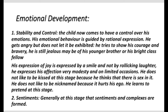Emotional development during late childhood: first, stability and control — this is a period of emotional stability and control. The child comes to have control over his emotions and his emotional behavior is guided by rational expression. He gets angry but does not let it be seen; he gets frightened but tries to show courage and bravery. His expression of joy is expressed by a smile and not by loud laughter. He expresses affection very modestly. He does not like to be nicknamed because it hurts his ego. He learns to pretend at this stage. Generally, this is the stage at which sentiments and complexes are formed.